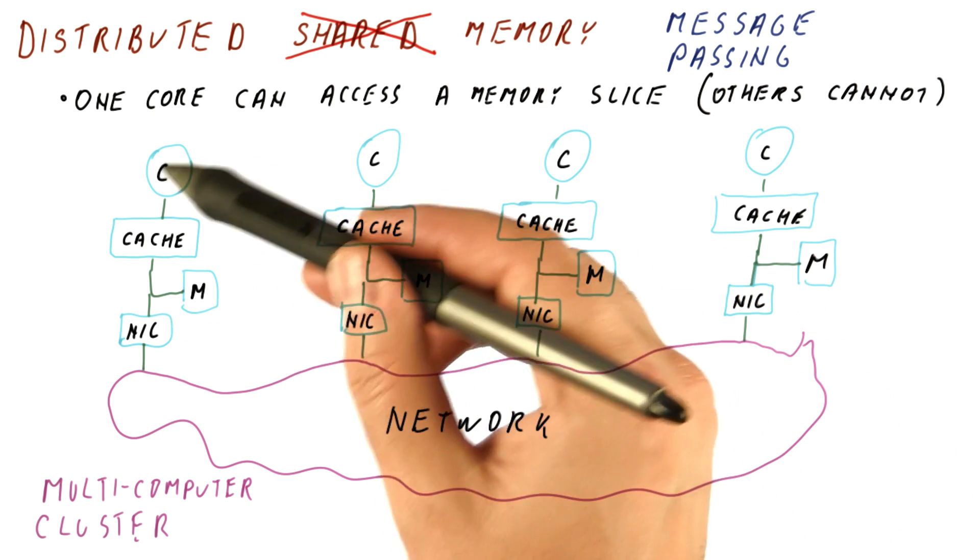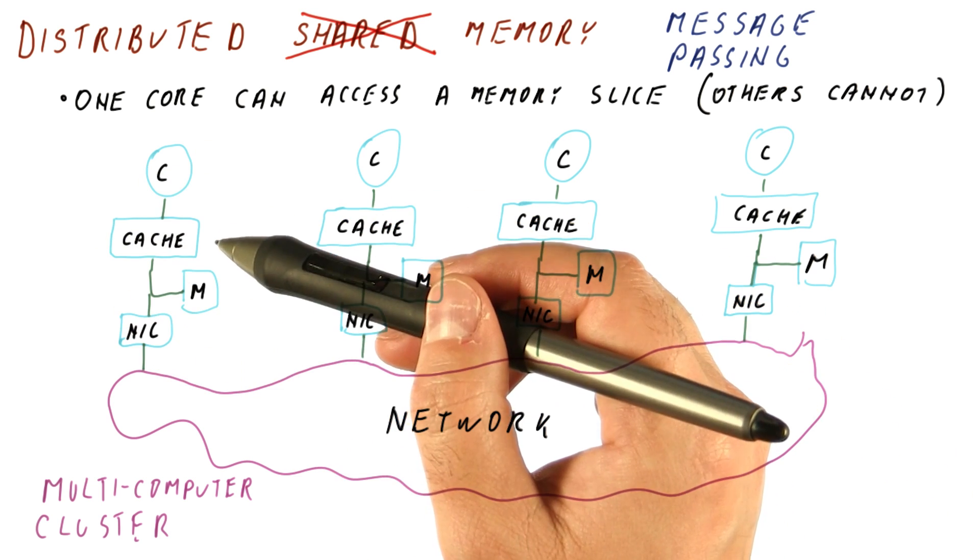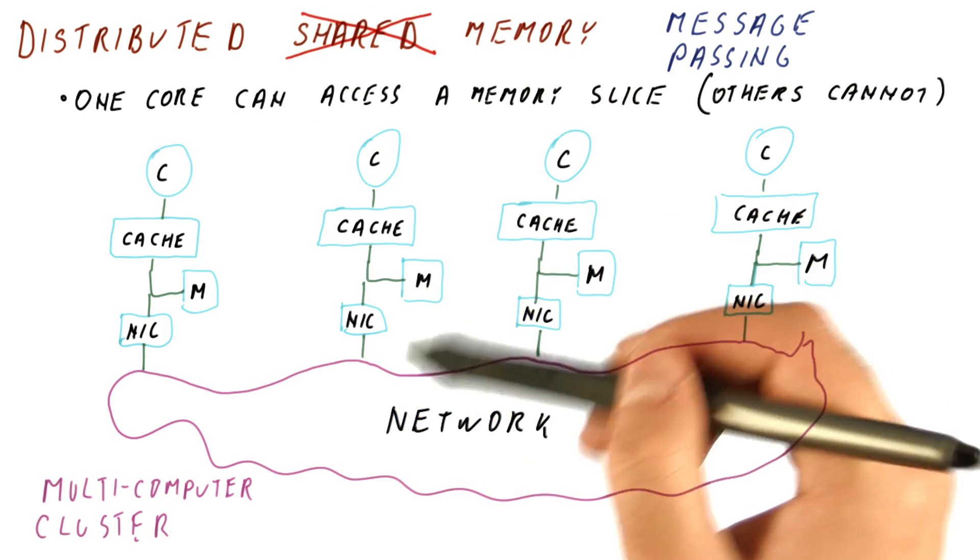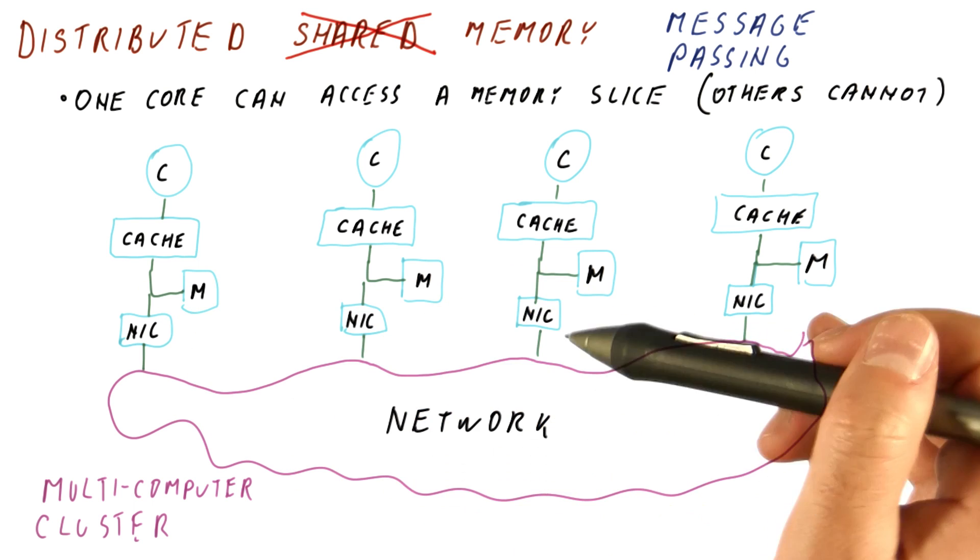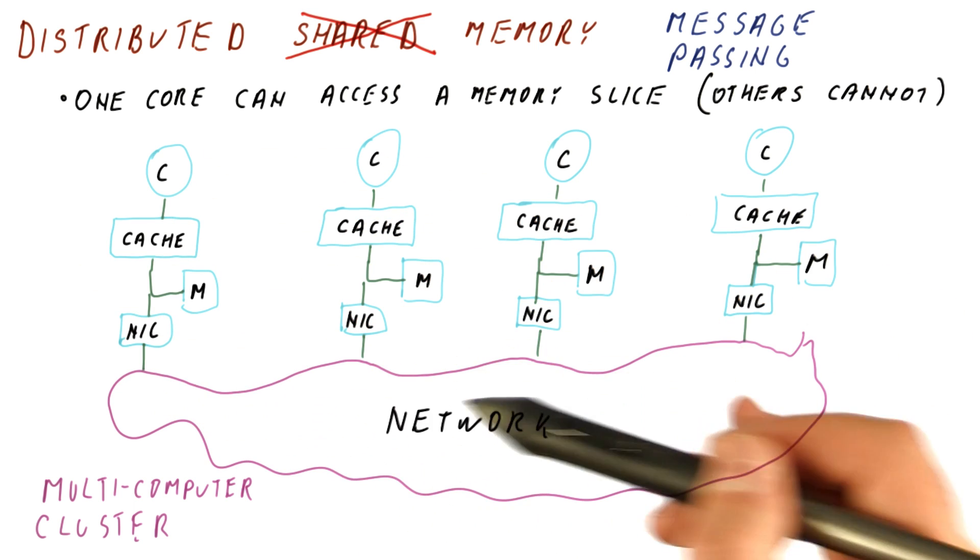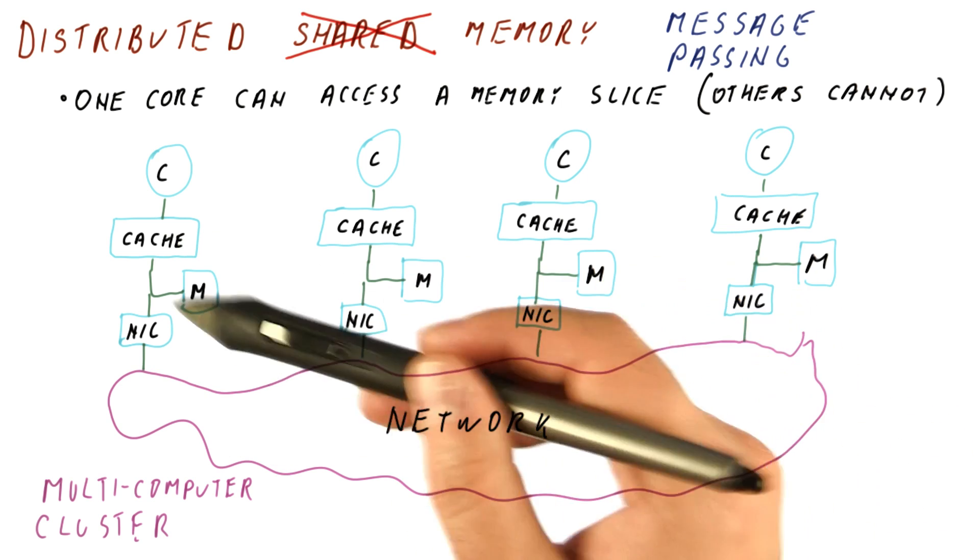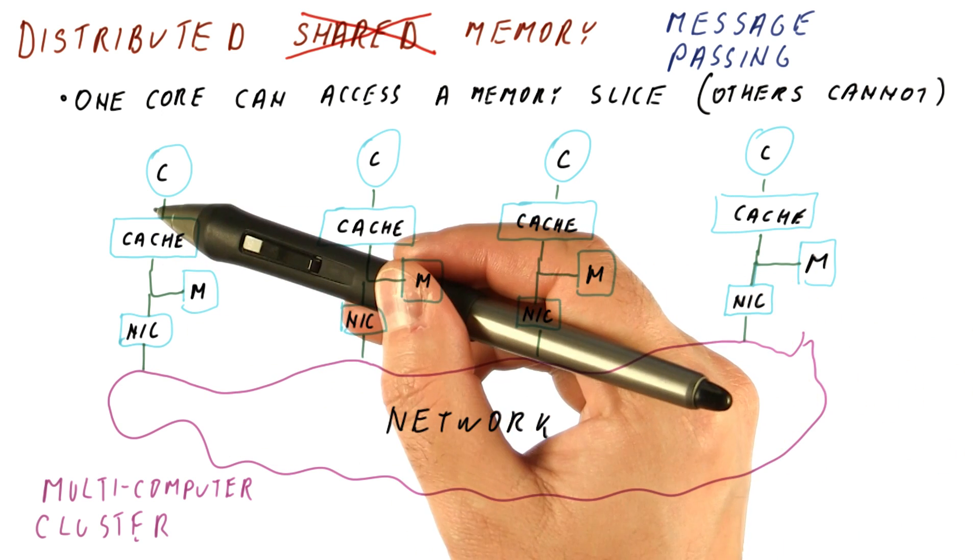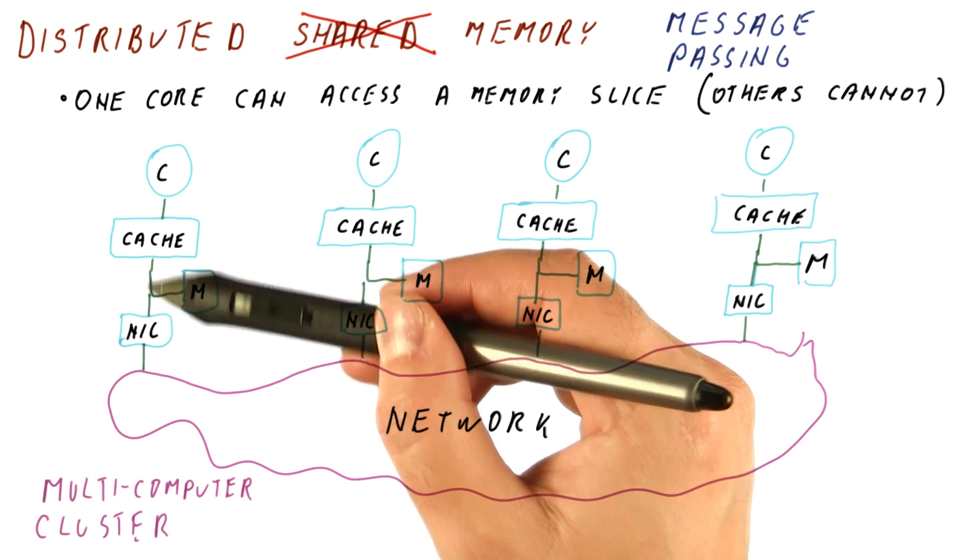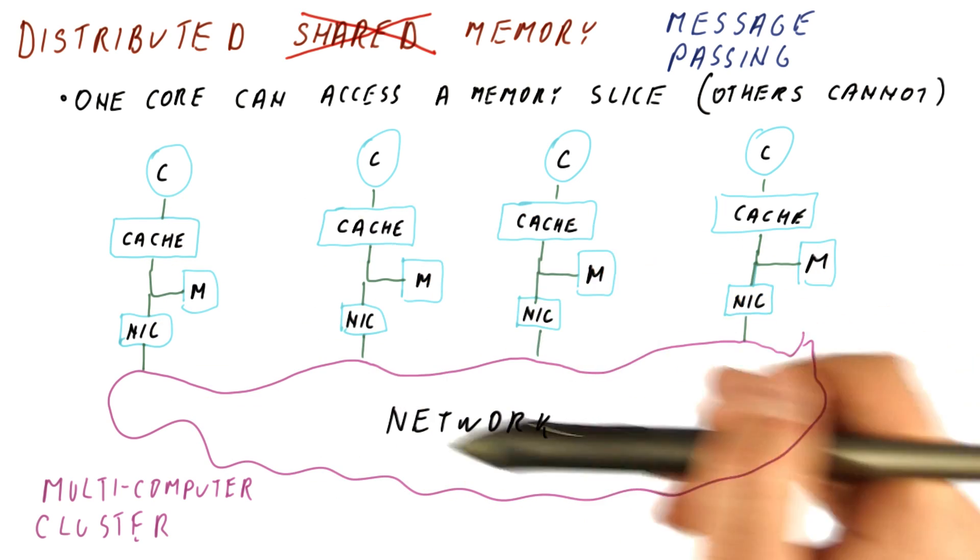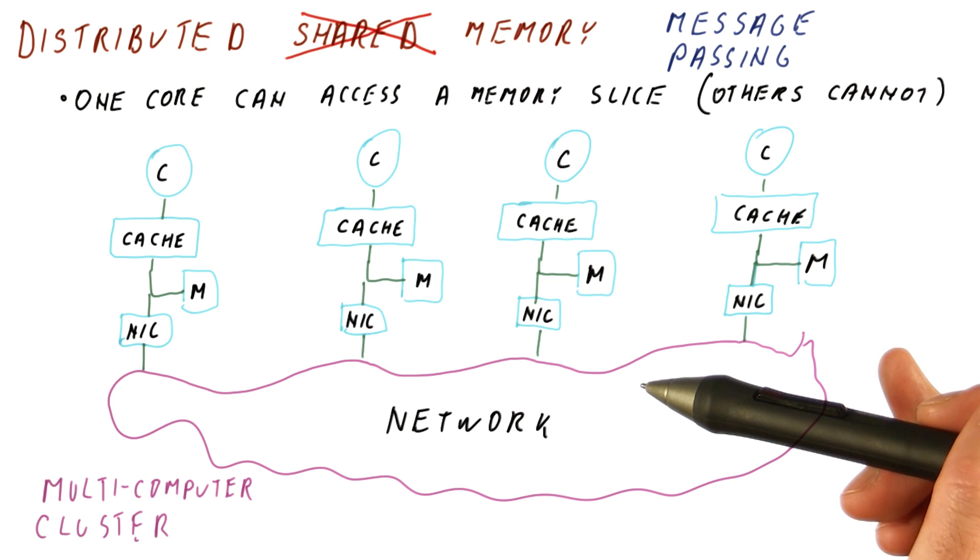And if at all possible, access the local memory. So this approach works better primarily because it forces the programmer to figure out things that otherwise it might not notice. Because it forces the programmer to figure out how to communicate efficiently, whereas in shared memory, the programmer may not even realize that some of the accesses are not local and thus are slow and causing a lot of communication to happen.